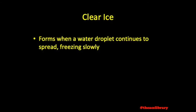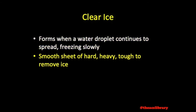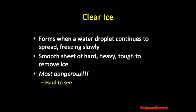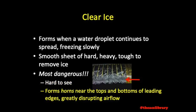Clear ice forms when, after impact, a water droplet continues to spread, freezing slowly as a smooth sheet of hard, heavy, tough-to-remove ice. Clear ice is the most dangerous to encounter; as the name states it is clear, making it harder to recognize than rime ice. It is heavier and forms horns near the tops and bottoms of leading edges, greatly disrupting airflow. Avoid cumuliform clouds as clear ice may rapidly accumulate, especially between temperatures of 0 and negative 15 degrees Celsius.